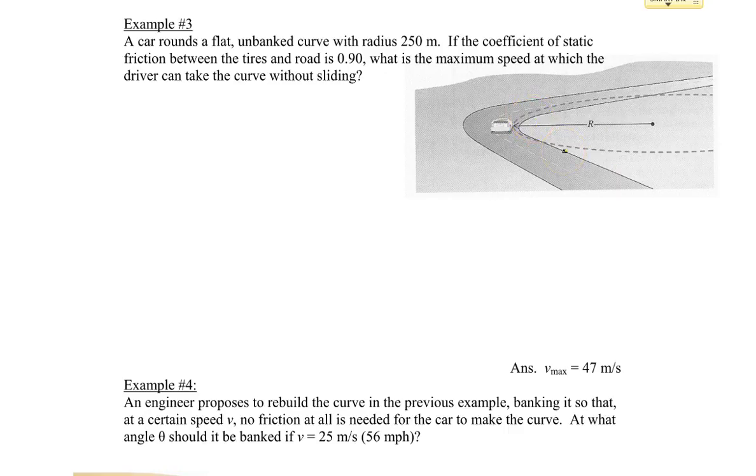So let's start off by writing what we know as the given. We have the radius which is 250 meters, the coefficient of static friction which is 0.9, and that's all we're given. We have to figure out what the speed is, the maximum speed.